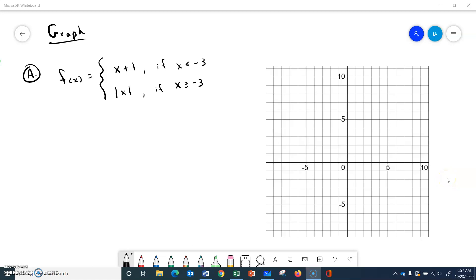Hey, it's Mr. Alred, and we're going to graph some piecewise functions. The first one I have here is f of x equals, and it has two pieces. The first one is x plus 1 if x is less than negative 3.